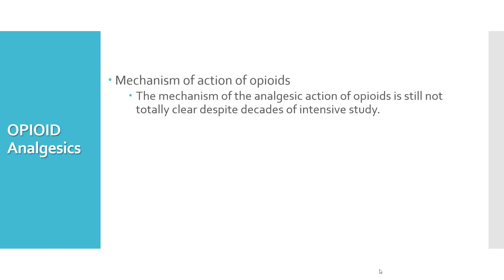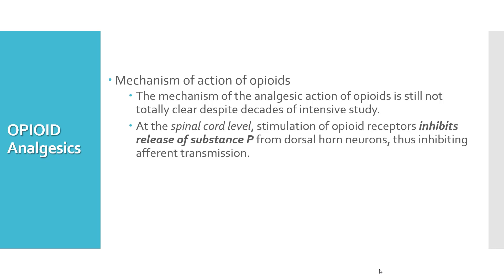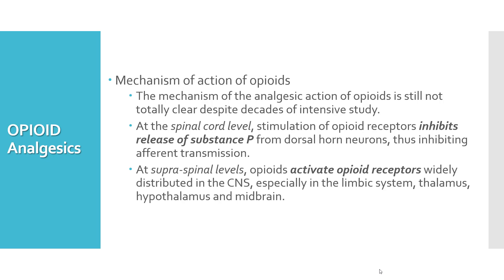Looking at opioids first — recall the built-in analgesia system with endorphins and encephalines. Although they work through endogenous receptors, the exact mechanism is still not clear despite decades of intensive research. With opioid analgesics, both pain perception and emotional responses are altered; patients have reported that they could still feel the pain but it no longer worries them. They work at the spinal cord level, stimulating opioid receptors and inhibiting the release of substance P from dorsal horn neurons, which is the main neurotransmitter involved in pain perception. At supraspinal levels, they activate opioid receptors widely distributed within the CNS, especially within the limbic system, thalamus, hypothalamus, and midbrain.